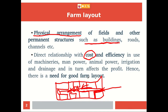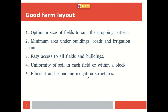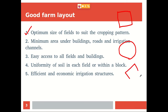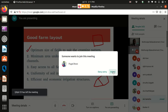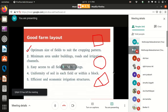There is a need for a good farm layout. A good farm layout should consist of an optimum size of field to suit the cropping pattern. The field shape should mostly be rectangular or square — it should not be round, oval, or undulated, because management will be difficult under those situations. Also, the minimum area under buildings, roads, and irrigation channels should be kept as minimum as possible.